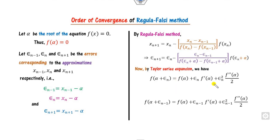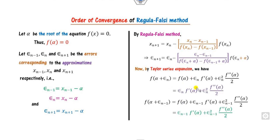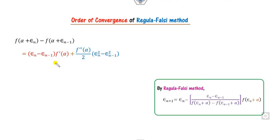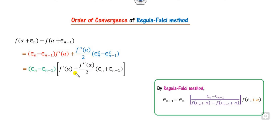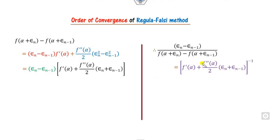Writing in Taylor series form, f(alpha + epsilon_n) expands accordingly. Now f(alpha) = 0, so those terms vanish, leaving a simplified expression. Substituting f of both terms and subtracting them gives the expression shown here. I can factor out epsilon_n from one term and epsilon_{n-1} from the other, and then take their ratio. Taking the reciprocal and factoring out f'(alpha) as common gives the result shown.